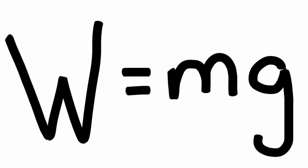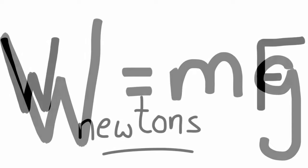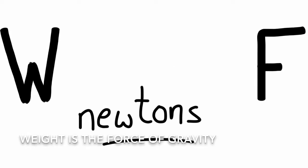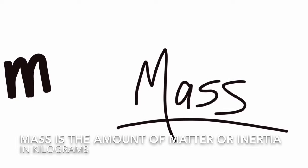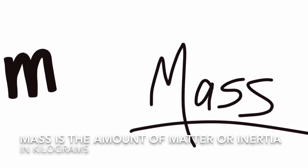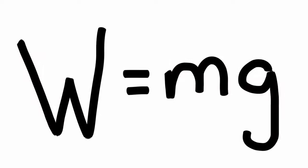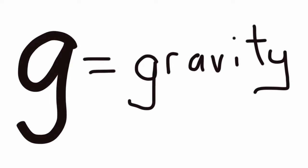This equation shows the basic relationship between mass and weight, where w is weight, the force of gravity in Newtons, m is mass in kilograms, and that mass is the amount of matter or inertia in an object, and g, that stands for gravity.